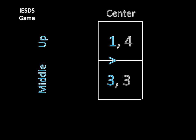And for our last iterated elimination, we see that middle is strictly better than up for the remaining game. So player one will play middle, and that gives us our unique equilibrium, middle center.